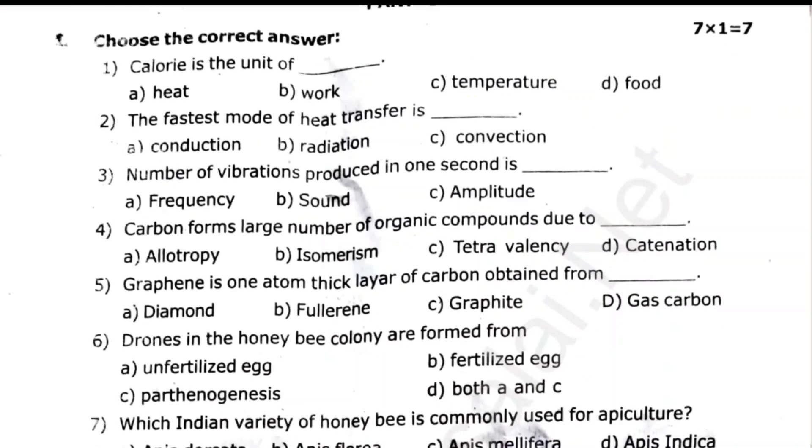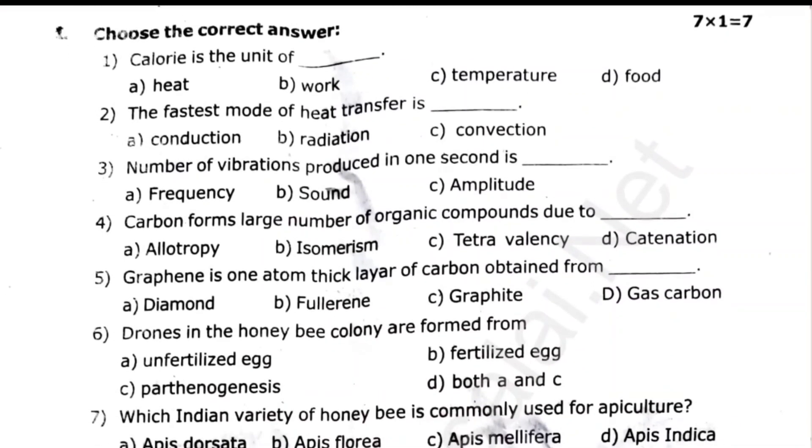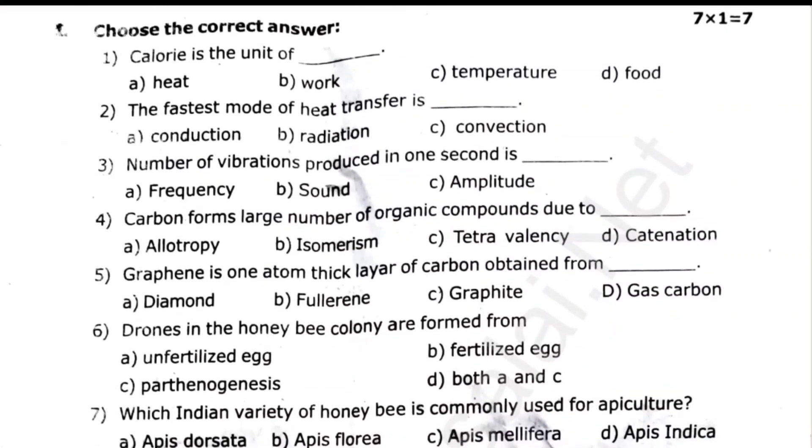Question 2: Number of vibrations produced in 1 second is frequency. Question 2: Carbon forms a large number of organic compounds due to catenation.